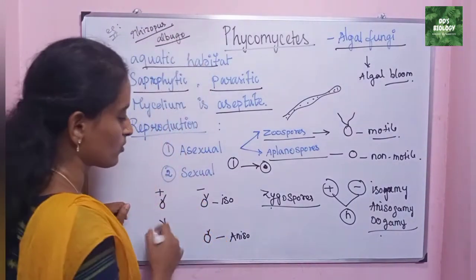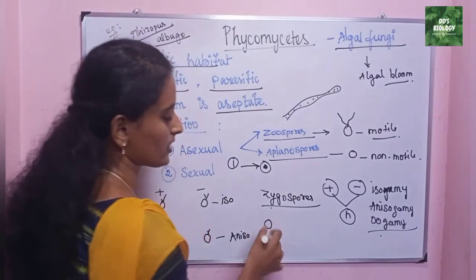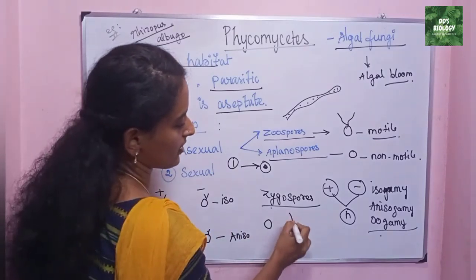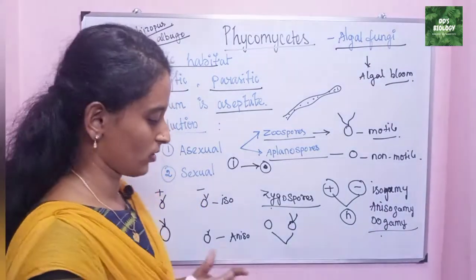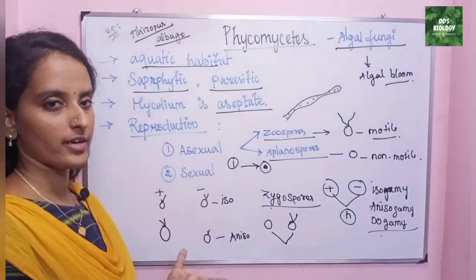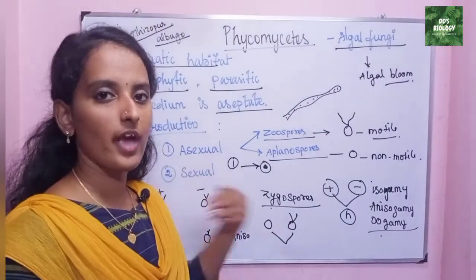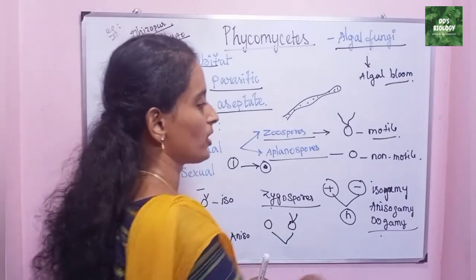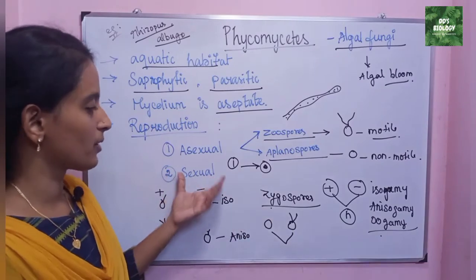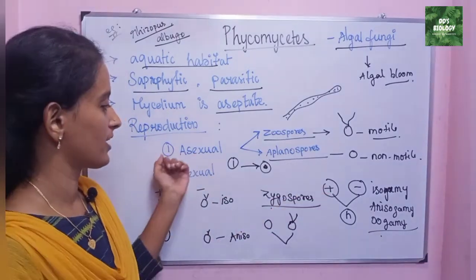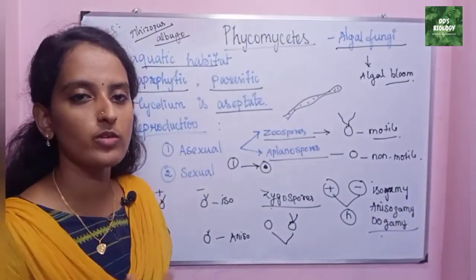Next is oogamy. In oogamy, there are two types: one is non-motile spores and the other is motile spores. Their fusion forms oogamy. Oogamy involves gametes that are morphologically and anatomically different. This gamete fusion product is called a zygospore, which is sexual reproduction. There are two types of sexual reproduction based on Phycomycetes.